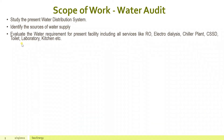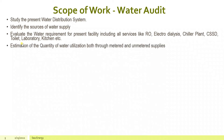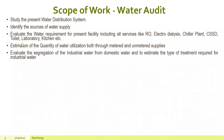Evaluate the water requirement for present facility including all services like RO, Electrodialysis, Chiller Plant, CSSD, Toilet, Laboratory, Kitchen, etc. Estimation of the quantity of water utilization both through metered and unmetered supplies. Evaluate the segregation of industrial water from domestic water and estimate the type of treatment required for industrial water. Explore and identify the leakages and water loss areas.